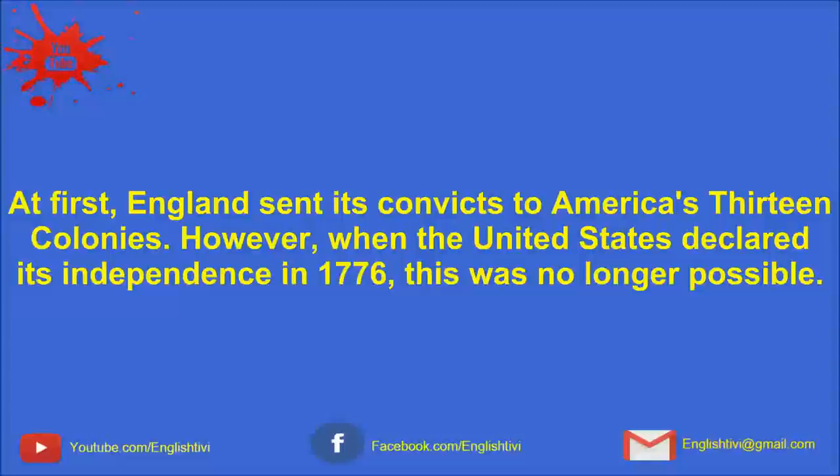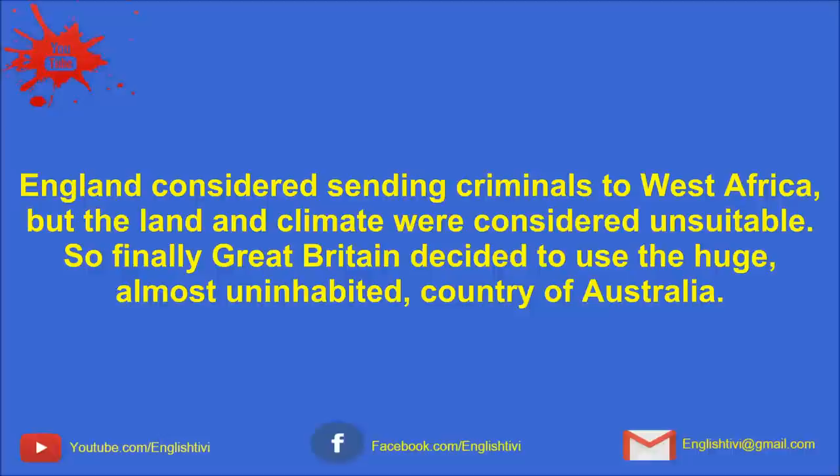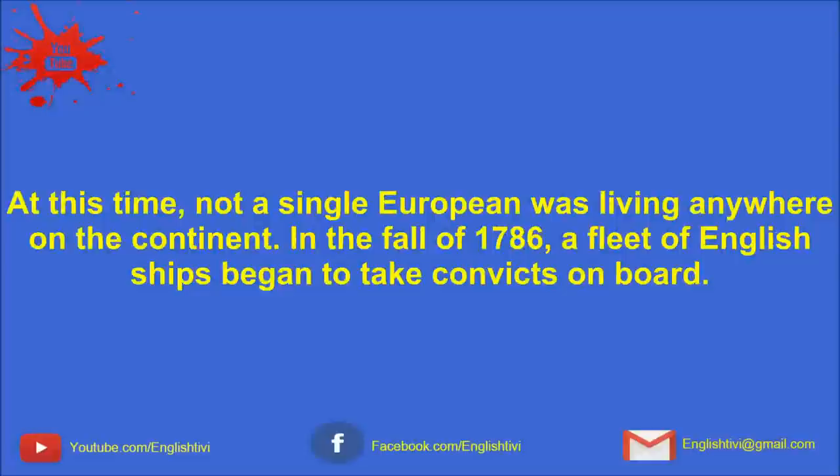At first, England sent its convicts to America's 13 colonies. However, when the United States declared its independence in 1776, this was no longer possible. England considered sending criminals to West Africa, but the land and climate were considered unsuitable. So finally, Great Britain decided to use the huge, almost uninhabited country of Australia. At this time, not a single European was living anywhere on the continent.